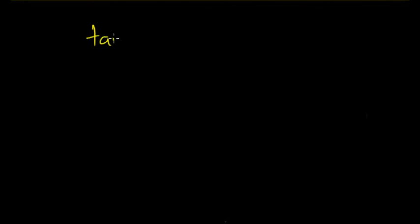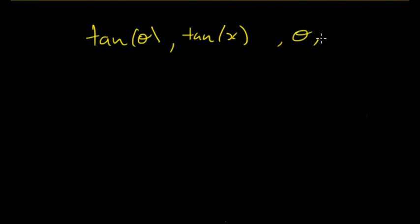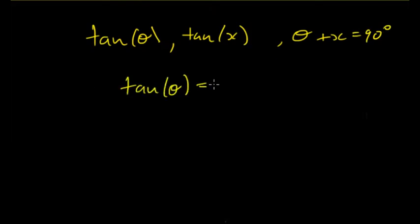So what about tan? If you have tan θ and tan x, and θ plus x equals 90 degrees so they are complementary angles, then tan θ is equal to 1 over tan x — that is, it equals the reciprocal.